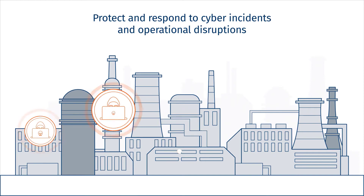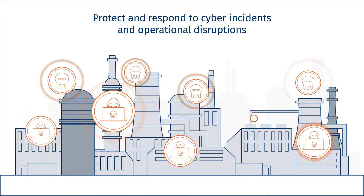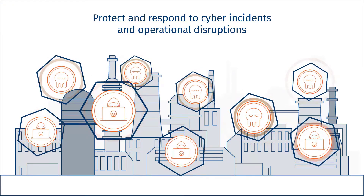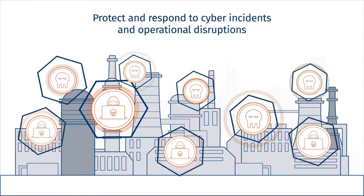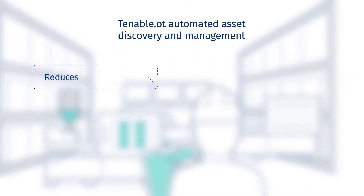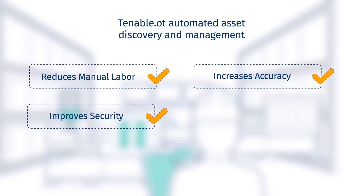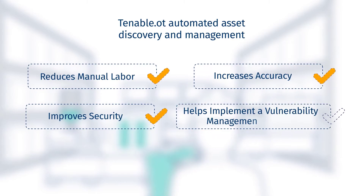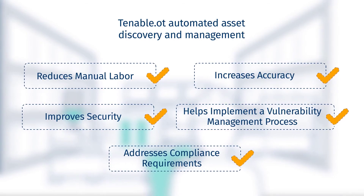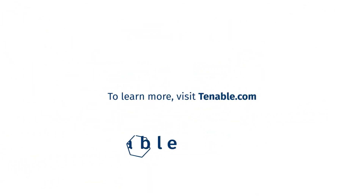Without automated asset management, critical infrastructure and industrial organizations are ill-prepared to deal with cyber incidents and operational disruptions. After all, if you don't know what you have, how can you protect it? Tenable.ot's automated asset discovery and management reduces manual labor, increases accuracy, improves security, helps implement a vulnerability management and prioritization process, and addresses compliance requirements. To learn more about Tenable, visit tenable.com.